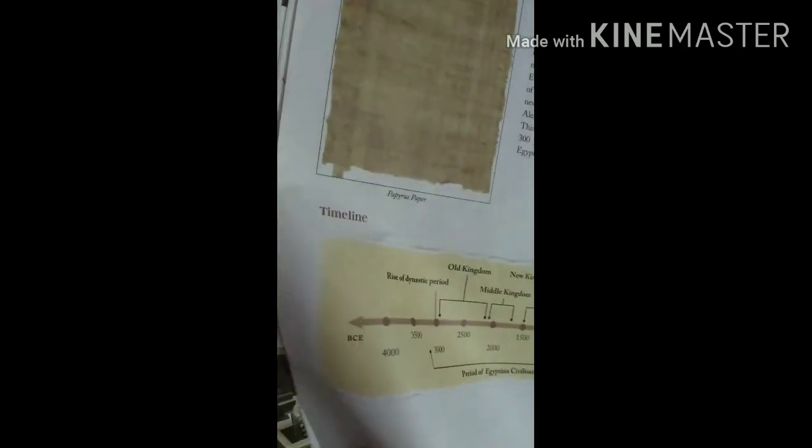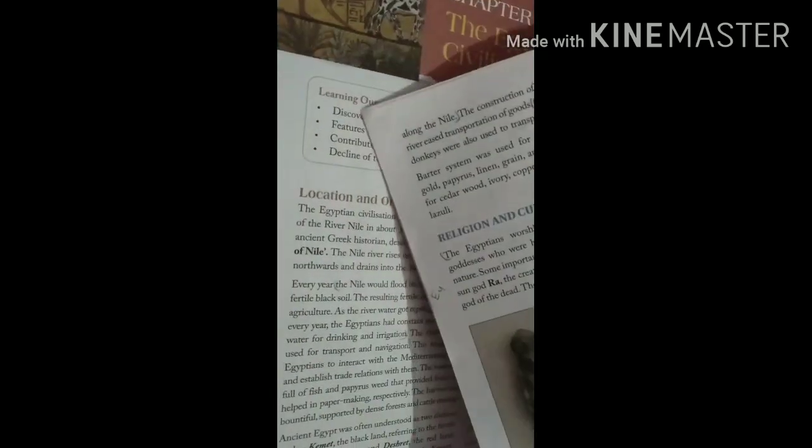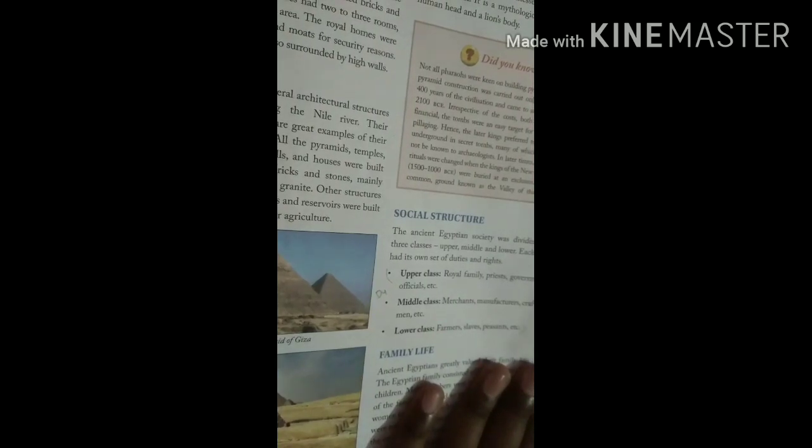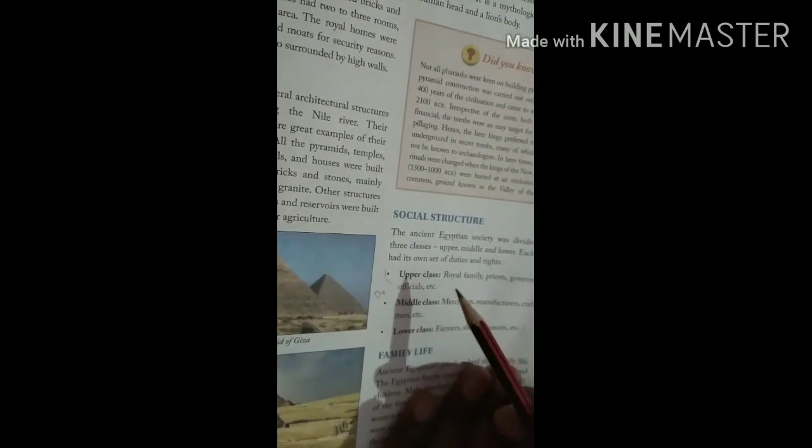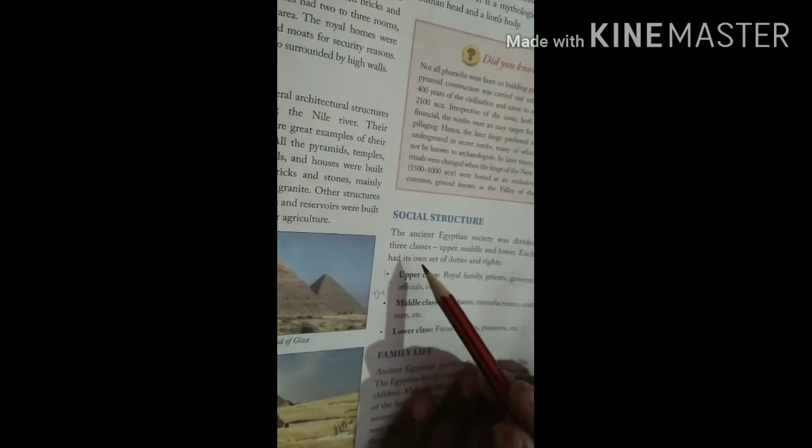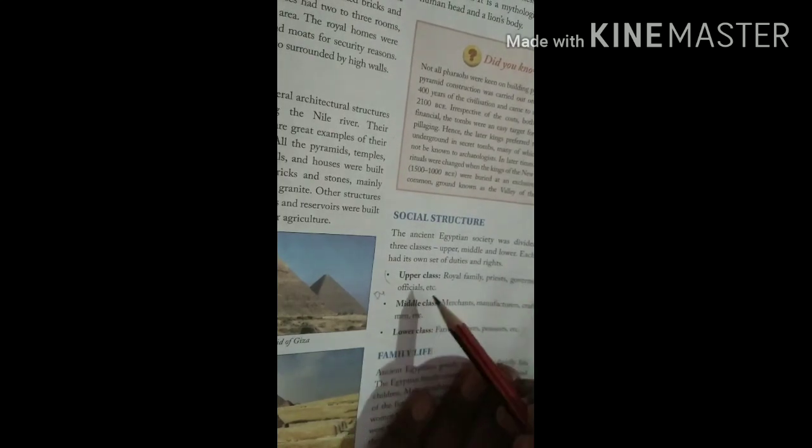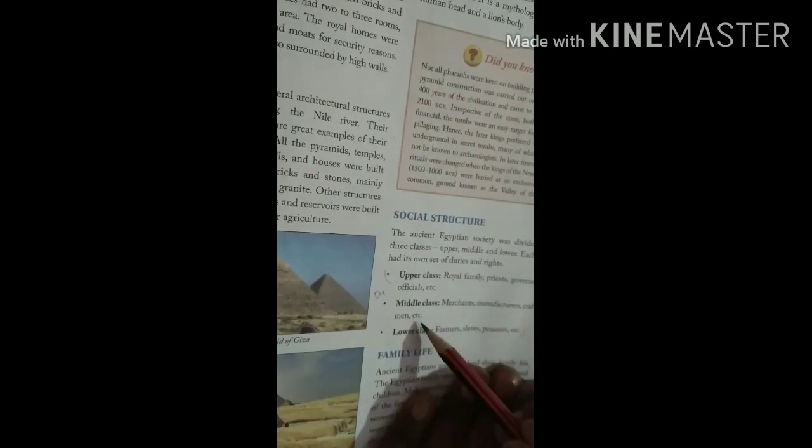Now come to the next, question number four. How was the society in Ancient Egypt divided? This is on page number fourteen. The Ancient Egypt society was divided into three classes: upper class with royal family, priests, government officials, etc.; middle class with merchants, manufacturers, craftsmen, etc.; and lower class with farmers and slaves.